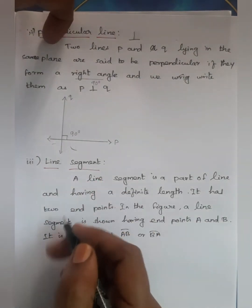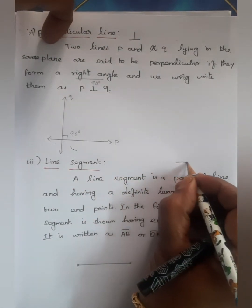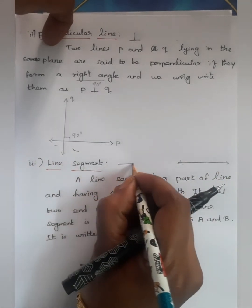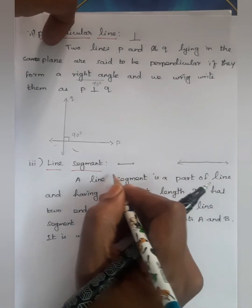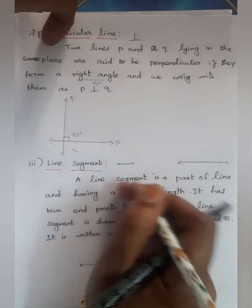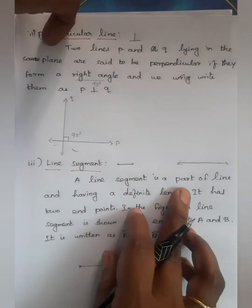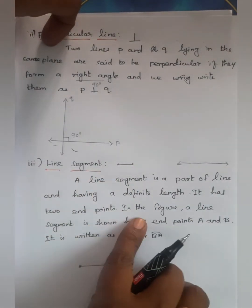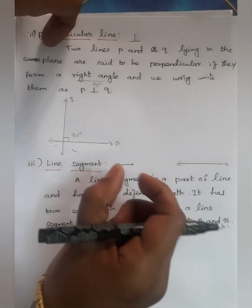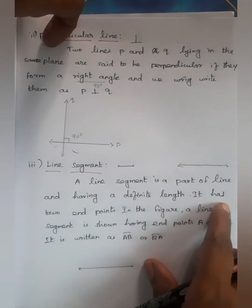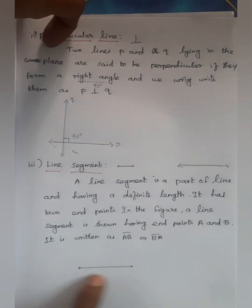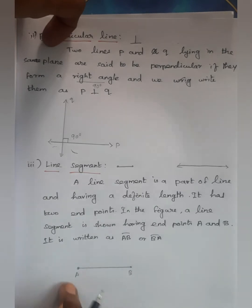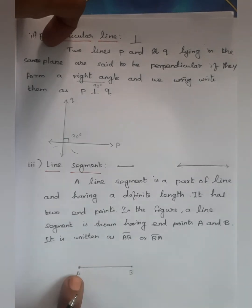This is perpendicular line. Next is line segment. A line segment has a definite length and two endpoints. In the figure, the line segment is shown having endpoints A and B. It is written as line segment AB bar or BA bar.